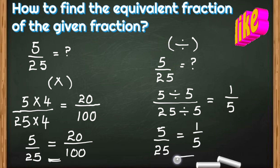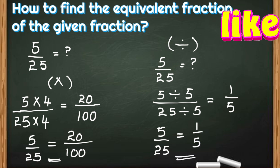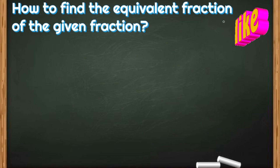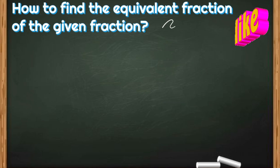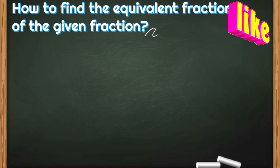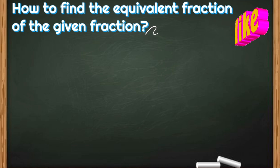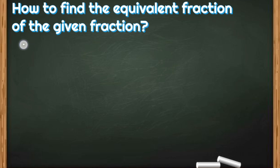So both 1 by 5 and 20 by 100 are equivalent fractions of 5 by 25. Sometimes we cannot use the division method if both the numerator and the denominator cannot be divided by any same number, but we can use the multiplication method with all fractions.